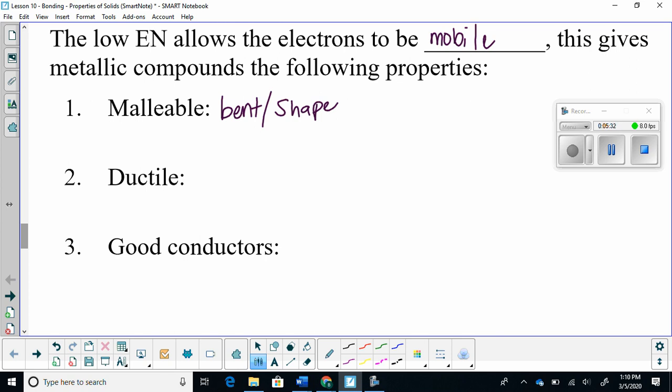Does anybody know what ductile means? Strength. More like strength. So what happens is when the metal deforms, it still is tough. It maintains its toughness. So it deforms but still maintains its strength or toughness. So it's really hard to pull apart. They're good conductors. That means that they can transfer heat and electricity.